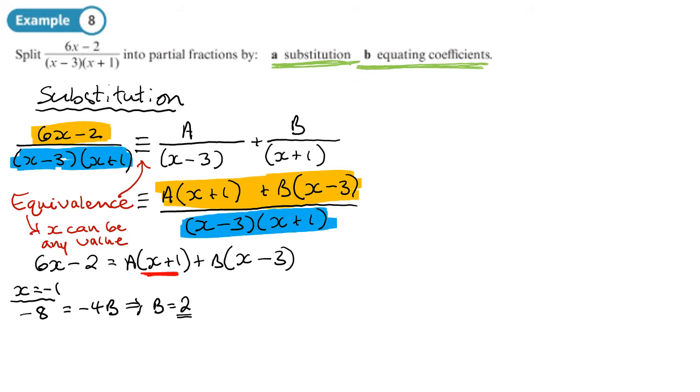OK. Almost done. Right. What's the other value I can make x? Well, I could make x equal to 3. That would make the b part disappear because I'd end up with 0 in the second bracket. So if I do that, 6 times 3 is 18, minus 2 is 16. Then on the other side, the second bracket disappears, but I will have 4a. Which means that a equals 4.